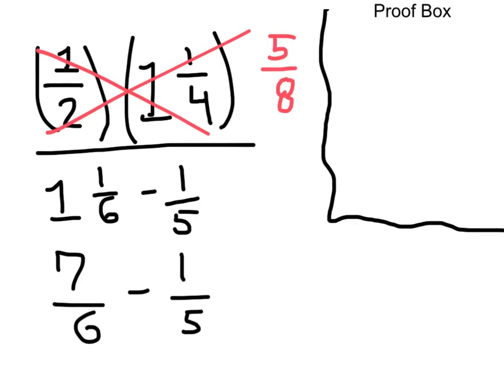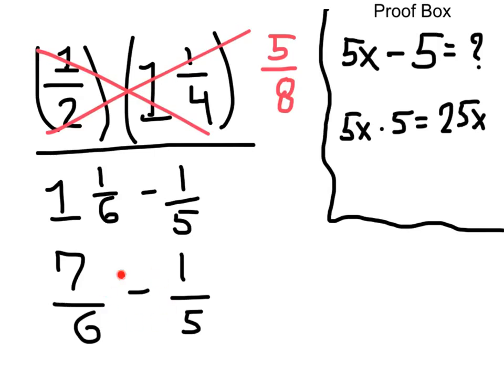Before we move on, I want to explain a little something in the proof box. In this problem, we cannot add and subtract these fractions because they do not have a common denominator, meaning they are not like terms.